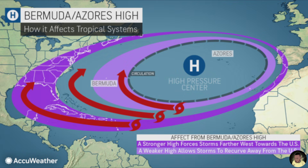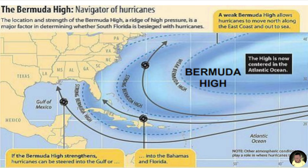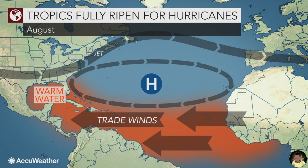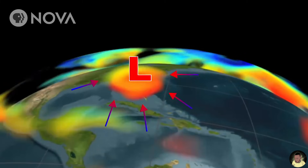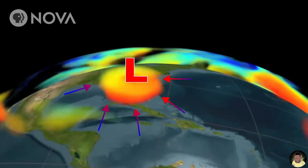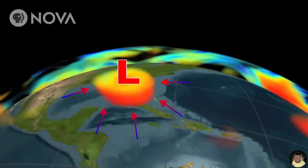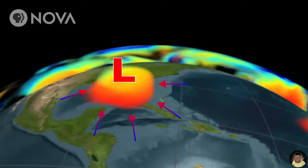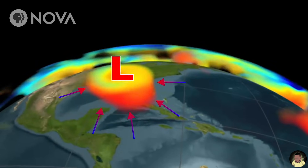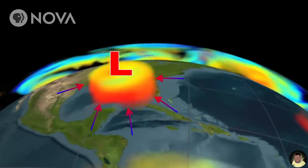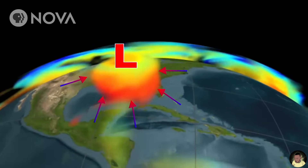Hurricanes move across the Atlantic basin due to large-scale steering currents from surrounding high and low pressure systems, primarily the Bermuda High. In the tropical Atlantic, the trade winds push storms westward, but the Coriolis effect causes them to gradually curve northward in a process called recurvature, and they eventually head northeastward into the mid-latitude westerly winds.